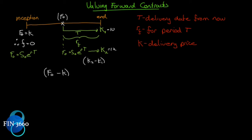That's the payoff at the end. If we want to know the value of the contract at this point in time, we must take the payoff at the end and discount it backwards at the risk-free rate. So to value any futures contract, we calculate what a futures price would be today, subtract the original futures price we agreed to, and discount that back from the end of the period to whatever day we're calculating.